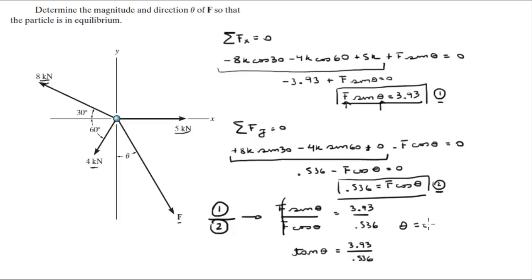So theta is given by the tangent inverse of 3.93 over 0.536. Therefore theta, when you plug this into your calculator, you get that theta is equal to 82.2 degrees.